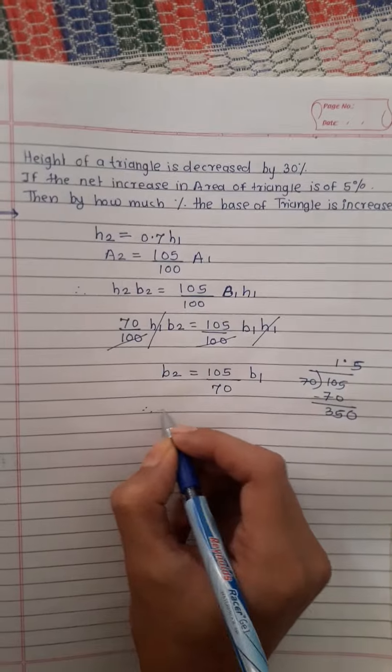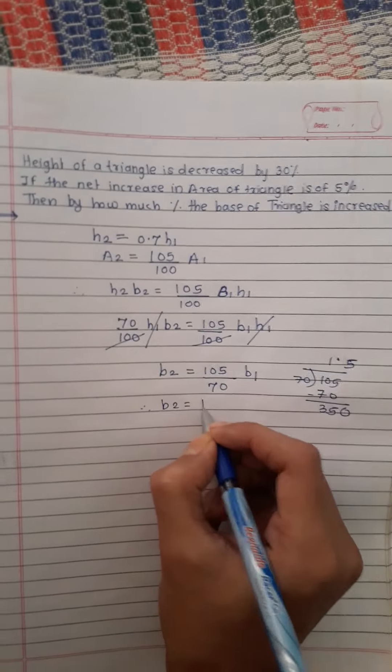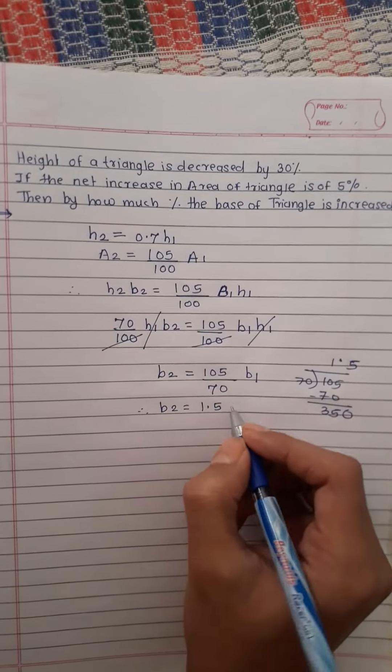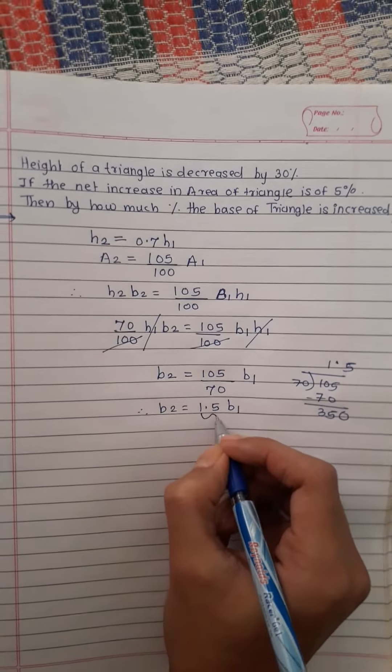Therefore b₂ is equal to 1.5 of b₁. Therefore the increase is 50 percent.